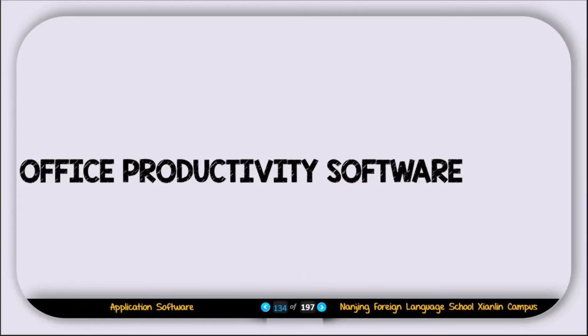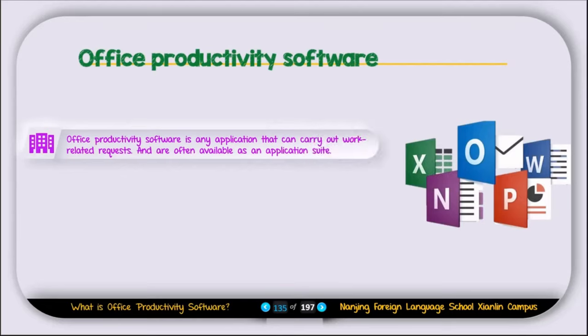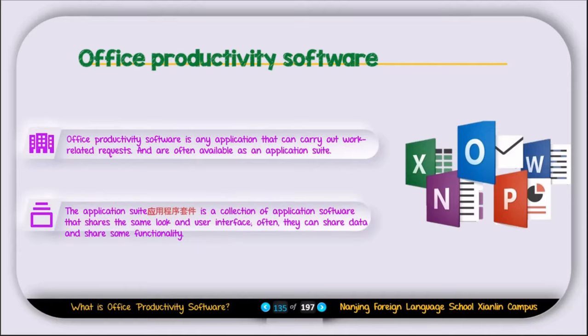The first type of application software is called productivity software. Office productivity software is an application that can carry out work-related tasks and is often available as an application suite. An application suite is a collection of application software that shares the same look and user interface, and they often share data and functionality. An example of an application suite is Microsoft Office, which includes Word, Excel, PowerPoint, OneNote, and Outlook — all software by Microsoft with the same user interface.